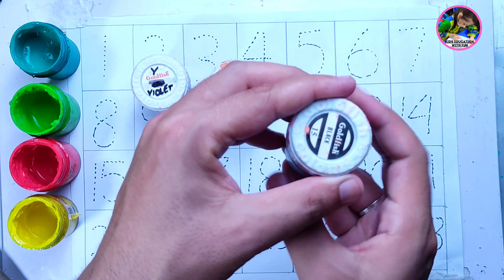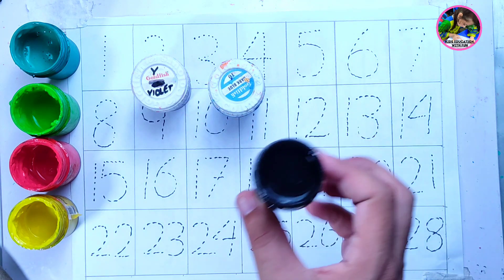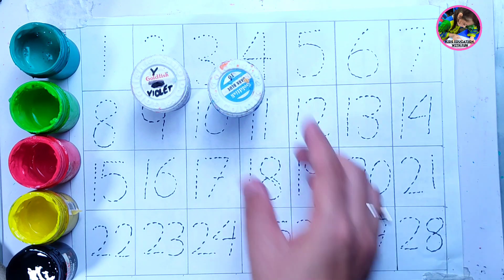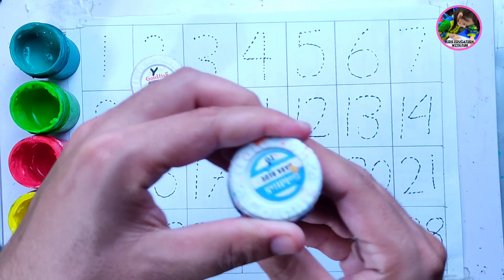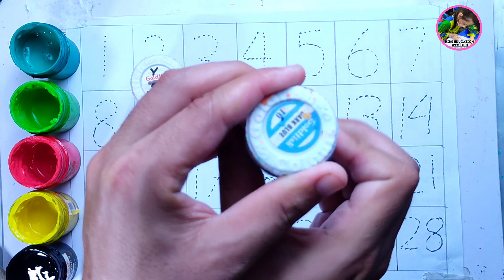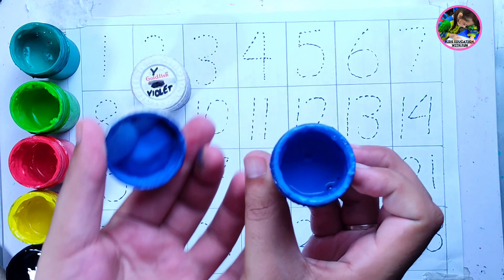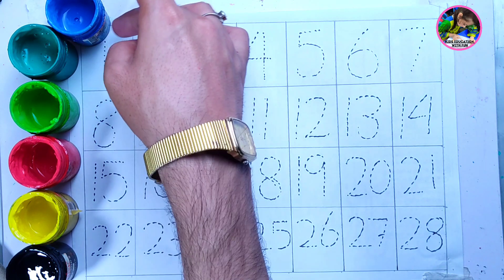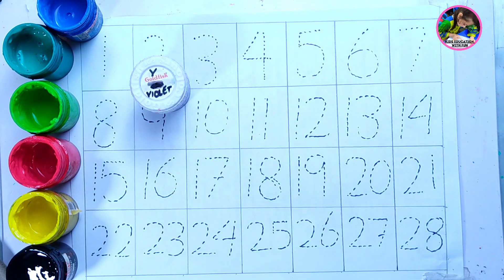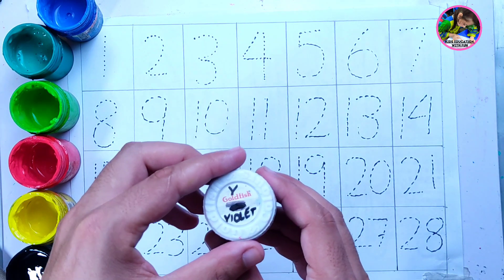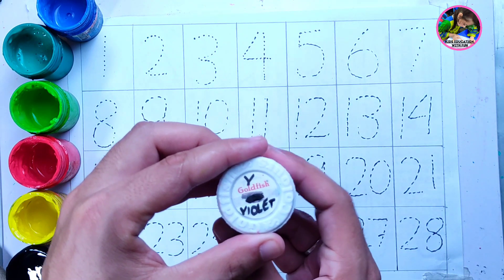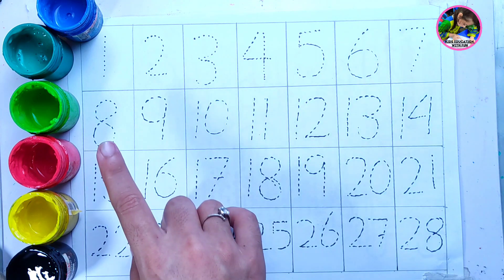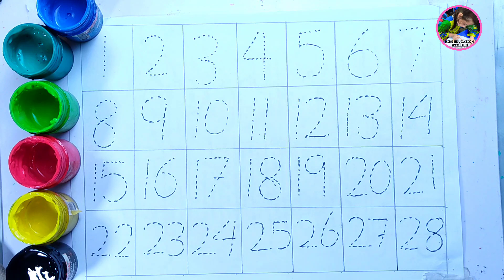This is black color, black color. And this is dark blue color, dark blue color. The last color here is violet color, this is violet color. Dear kids, let's start drawing numbers using these colors.